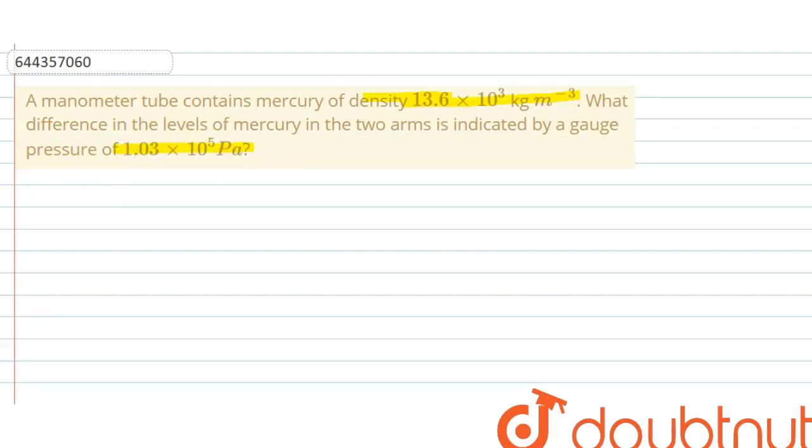Okay, so we have to calculate level difference. Let's say if that difference in level is h, then the pressure generated is 1.03 × 10^5 Pascal.